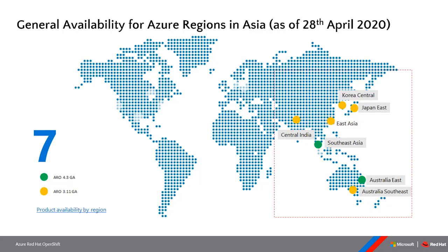Azure has presence around the world with 58 cloud regions — more than any other cloud provider. Focusing in on Asia, there are seven regions. The ones in green are where ARO 4 went GA, just on the 28th of April — about two and a half weeks ago. Other regions are still on ARO 3 and will progressively roll out ARO 4 in the coming months. Soon that number will be eight because Microsoft announced it's opening a region in New Zealand.